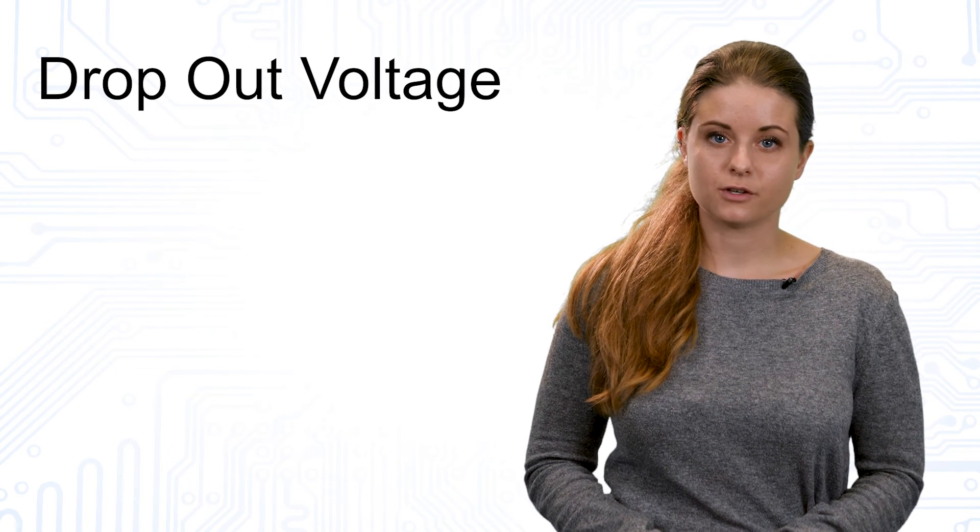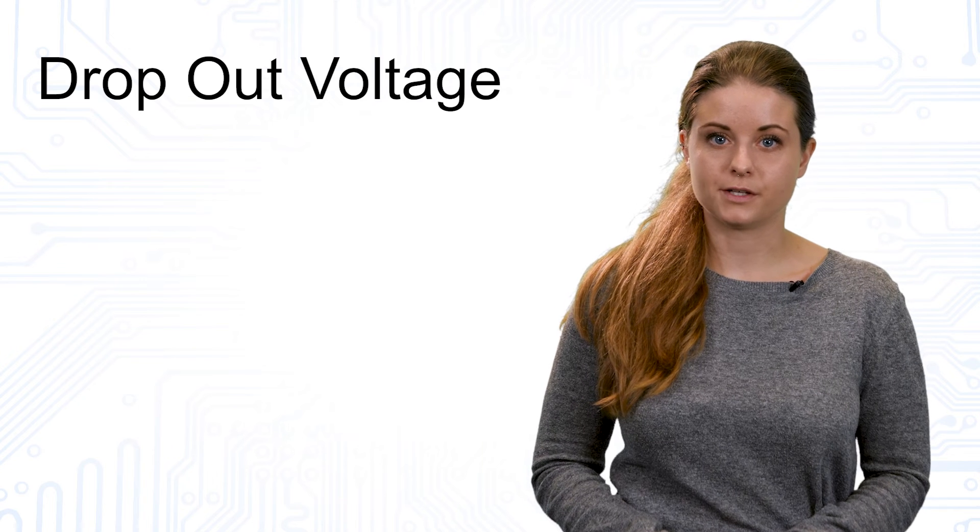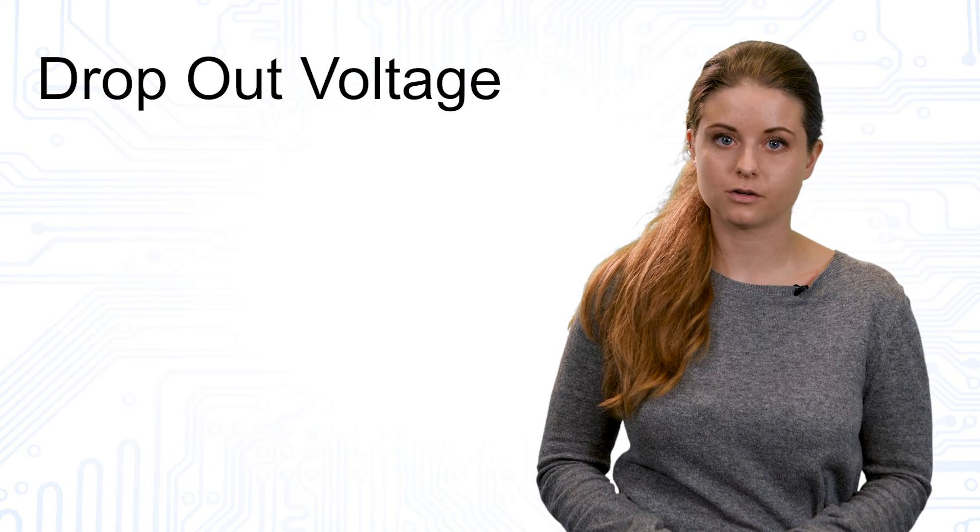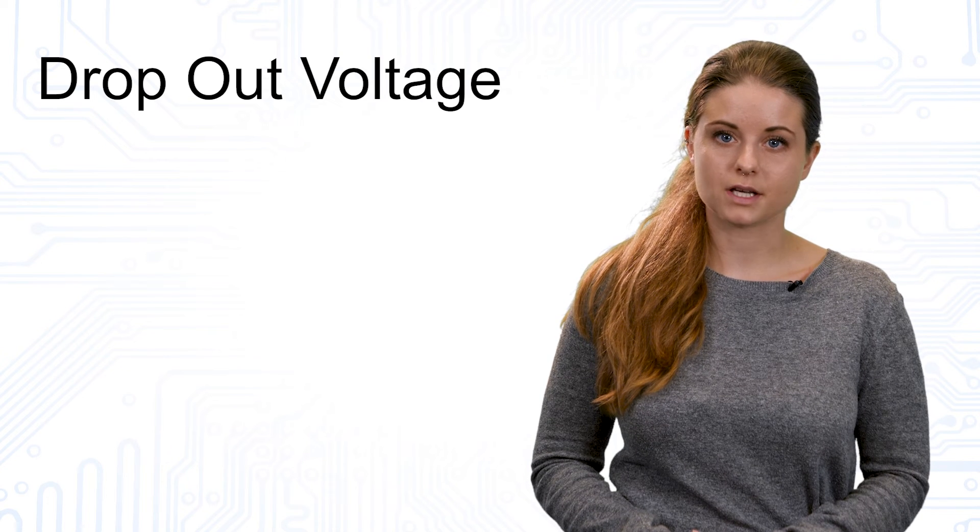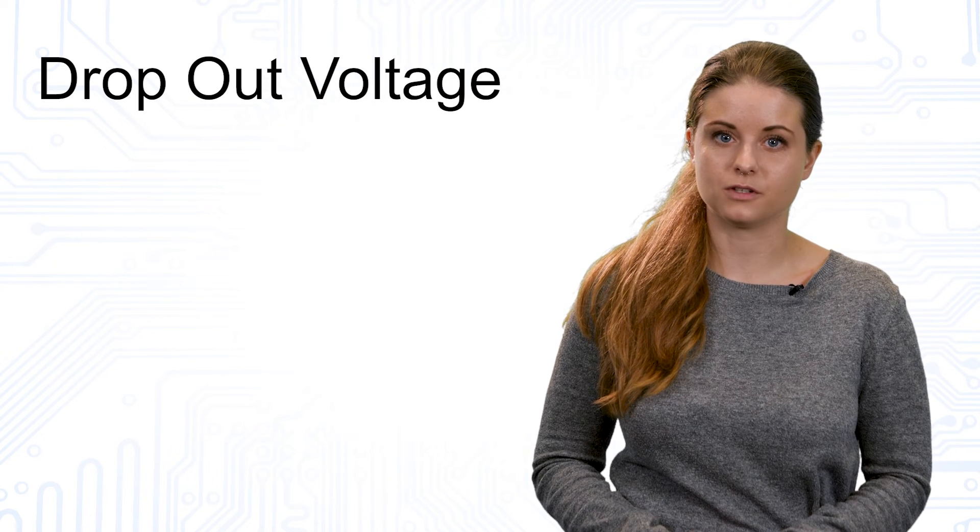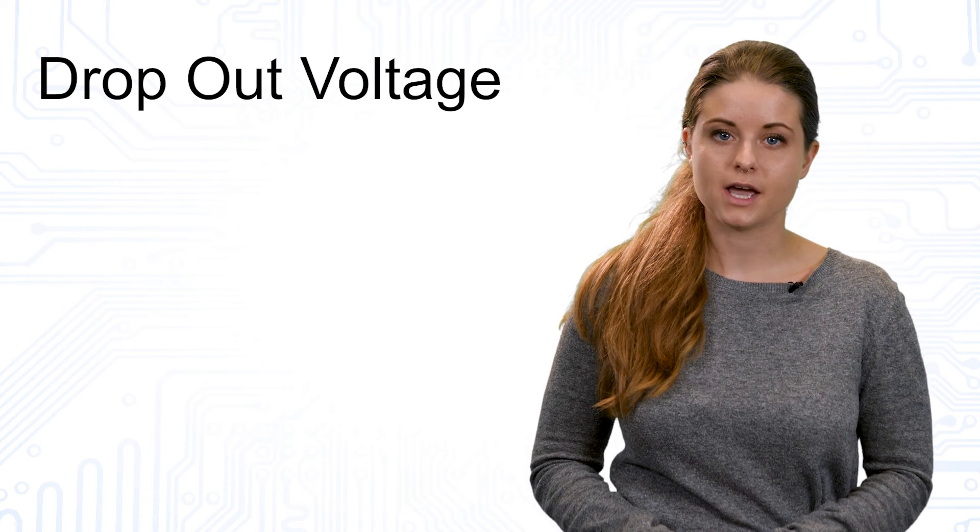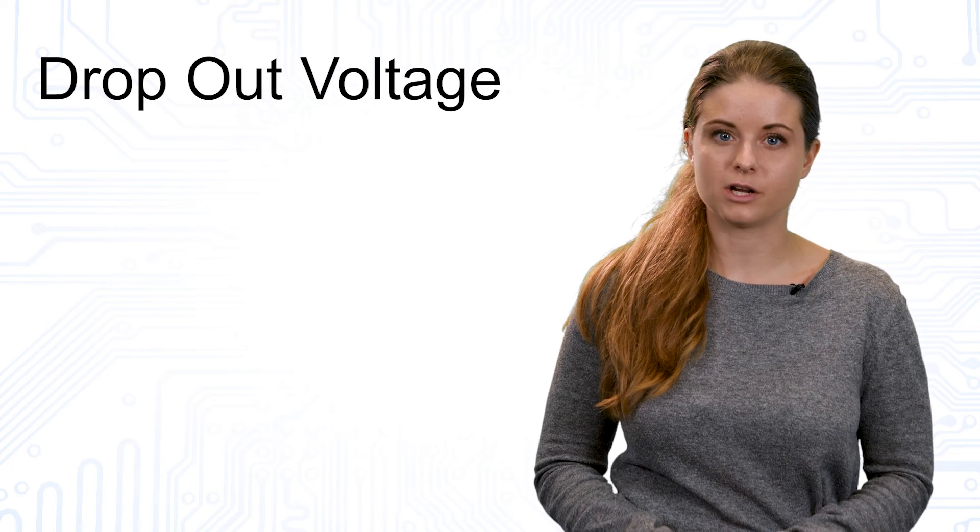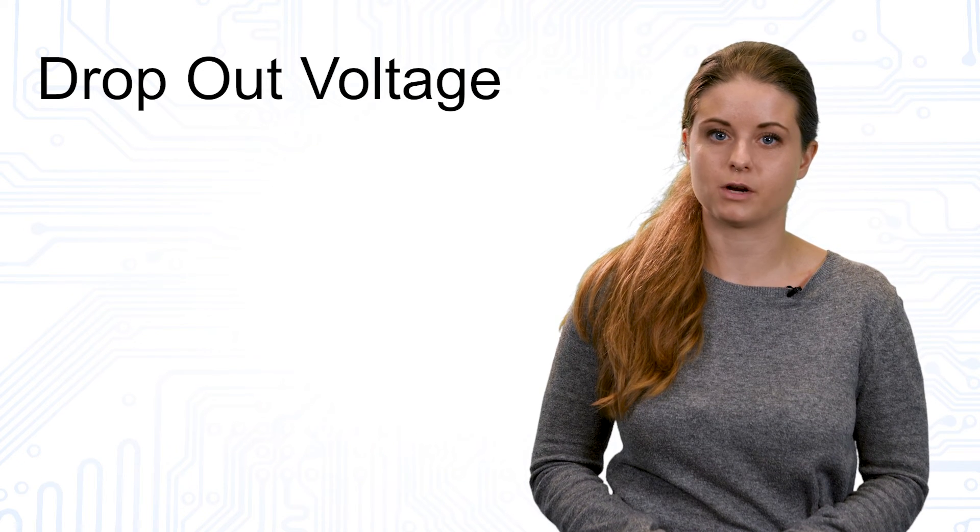To achieve a certain and stable output voltage at for example positive linear voltage regulators, the input voltage always has to be higher than the sum of the desired output voltage and the minimum dropout voltage to guarantee the proper regulation of the linear voltage regulator.